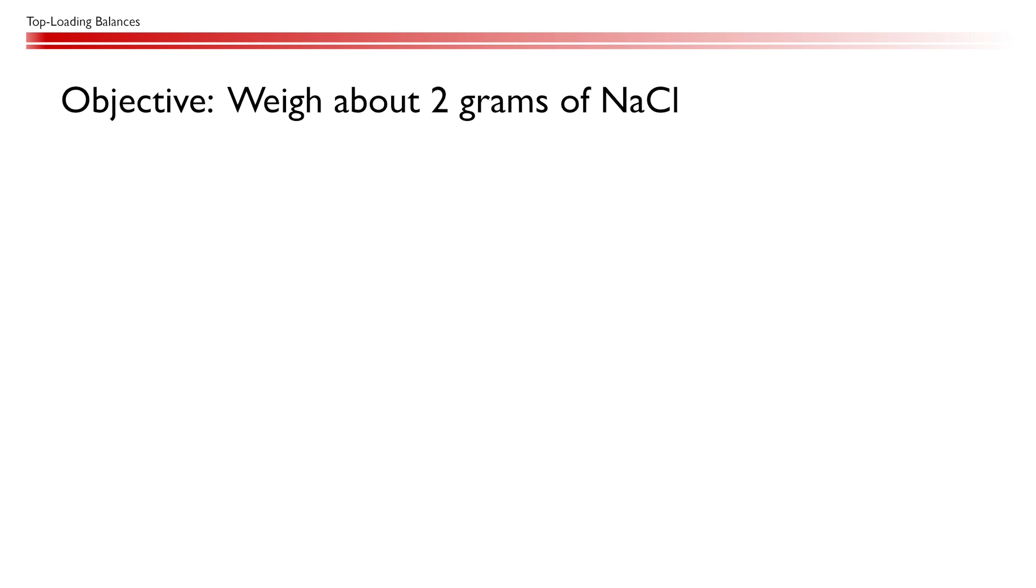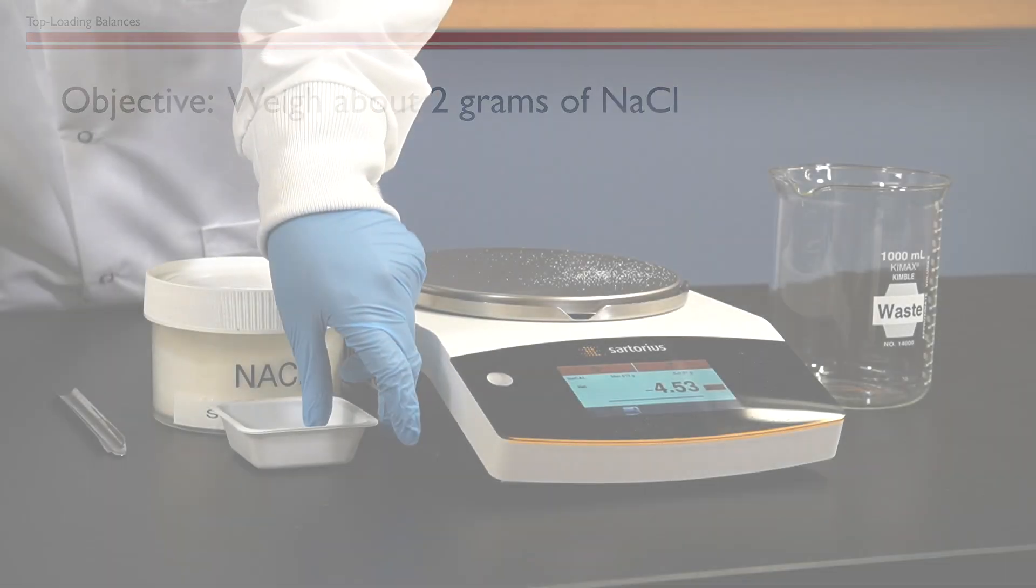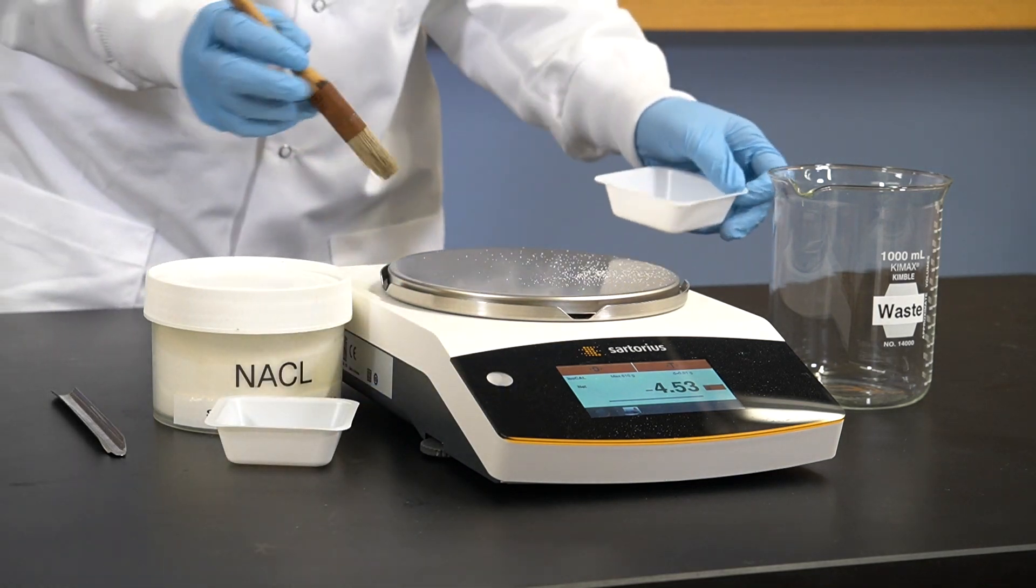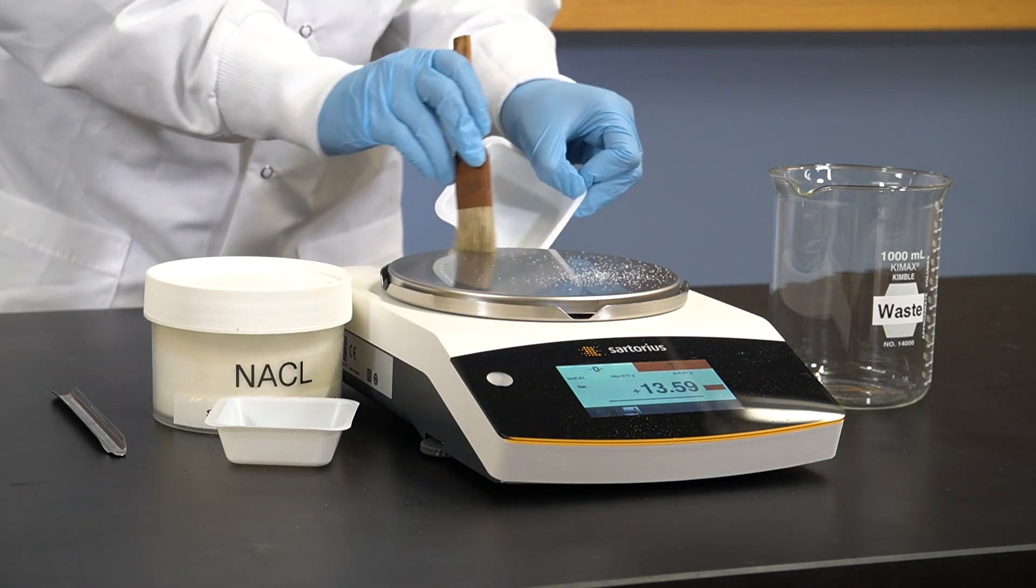Let's now use the top-loading balance to weigh about 2 grams of sodium chloride. Before starting, it is always a good idea to make sure that the balance is in good working condition.